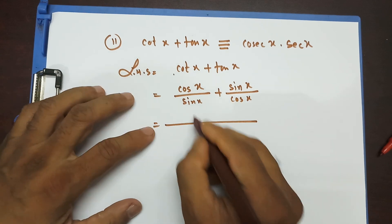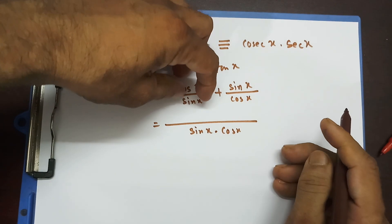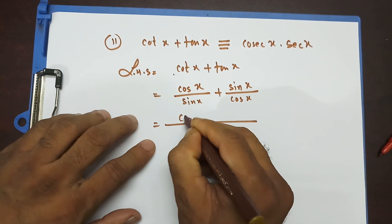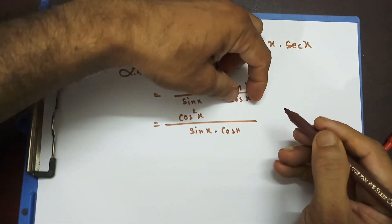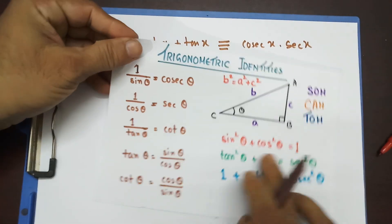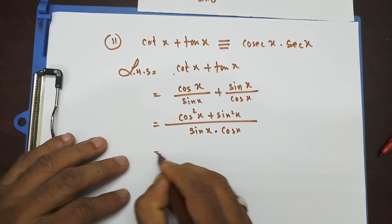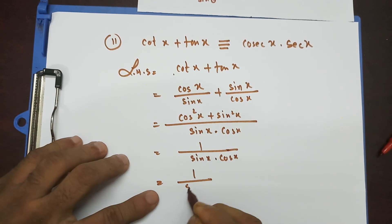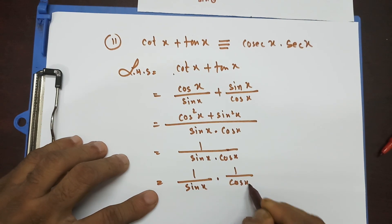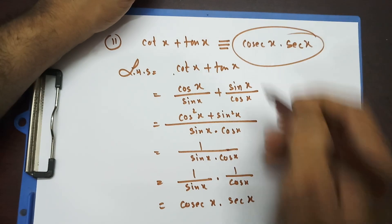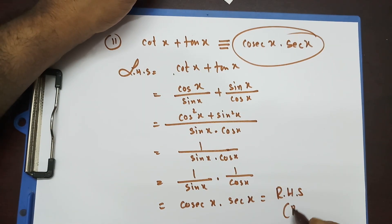The LCM of sin x and cos x is sin x times cos x. Combining the fractions: dividing each term's denominator into the LCM gives cos squared x plus sin squared x in the numerator, over sin x times cos x. Since cos squared x plus sin squared x equals 1, the numerator is 1. By the distributive law, 1 over (sin x times cos x) equals 1 over sin x times 1 over cos x, which is cosec x times sec x. This equals the right-hand side — proved.